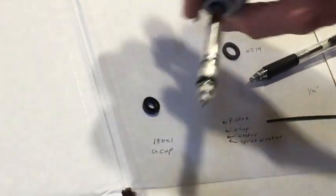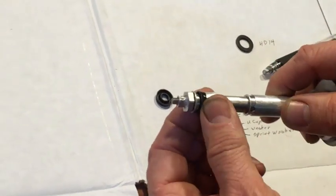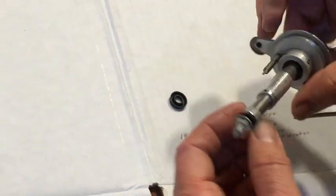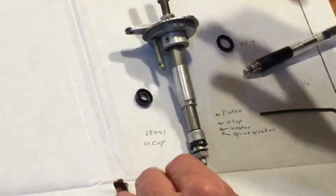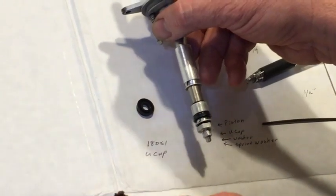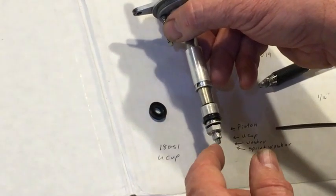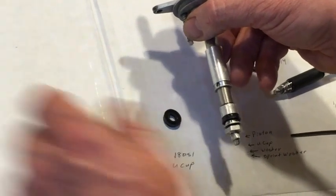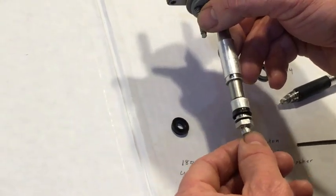Now the sprint washer is essentially just a spring and it allows the piston to rock back and forth. So when you remove this, of course you're going to want to lay it out in order and try to not get it confused. If you do, if you have a parts catalog, it'll help you get everything back in the right order.